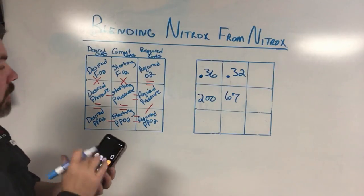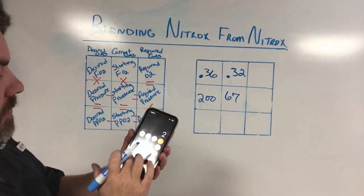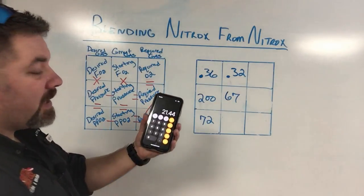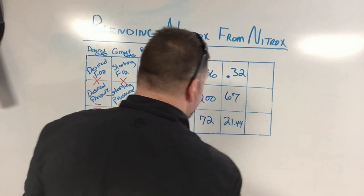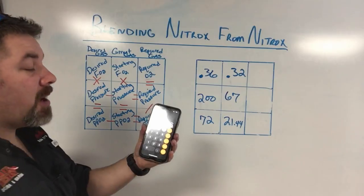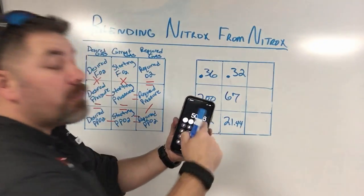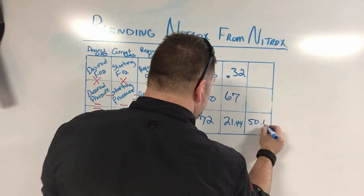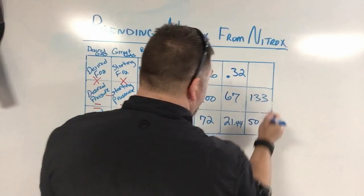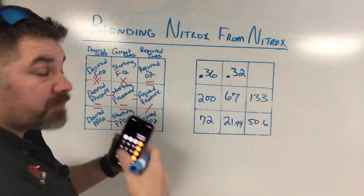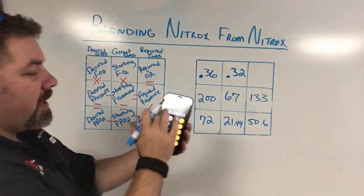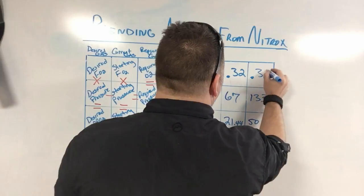Same math as before, just using a calculator. Take 0.36 times 200 = 72 bar. Then 0.32 times 67 = 21.44. Now the subtraction: 72 minus 21.44 = 50.56, which we round to 50.6. Then: 200 minus 67 = 133. Finally, to find the required blend: 50.6 divided by 133 = 0.38, or 38%. Exact same result as the Imperial calculation.